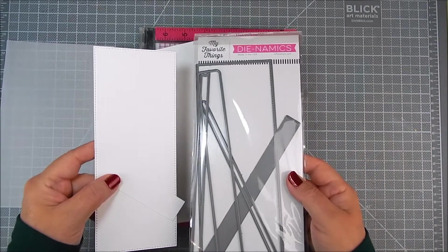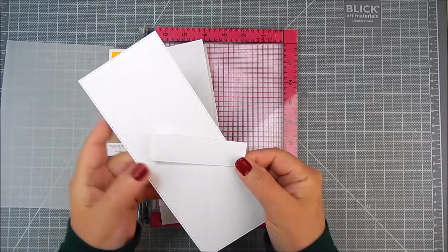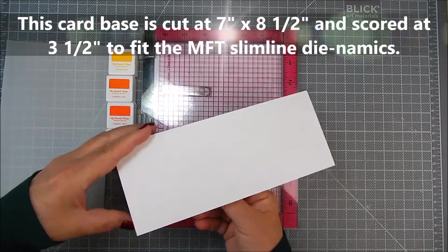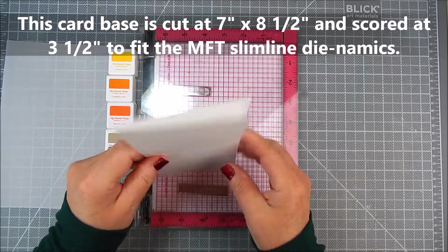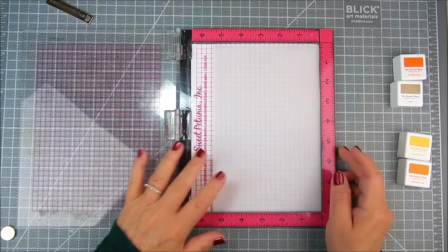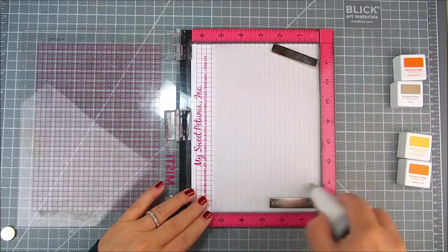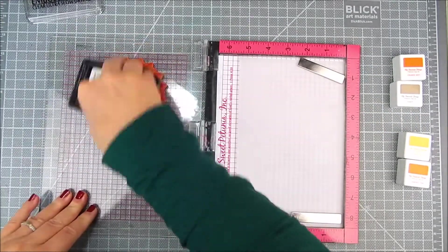I'm using their slimline version of dies. I cut the card base at seven inches by eight and a half inches and scored it at three and a half inches to fit the MFT dies. The card base could be a different size depending on the brand of dies you're using.